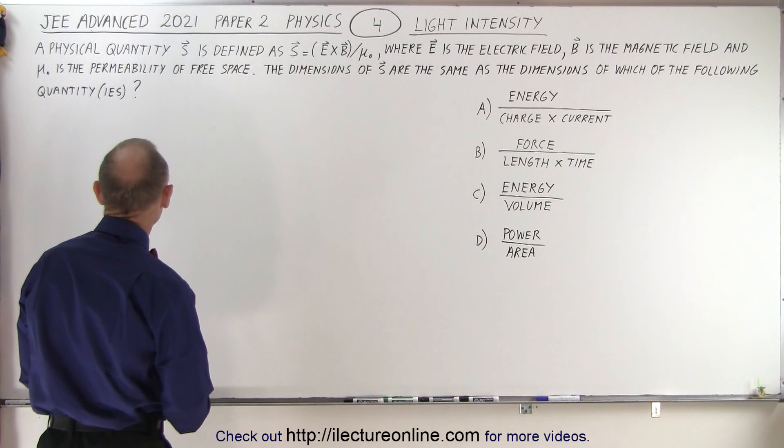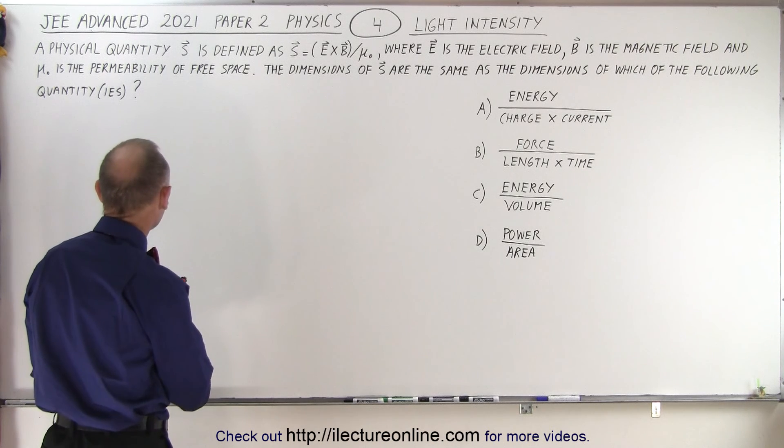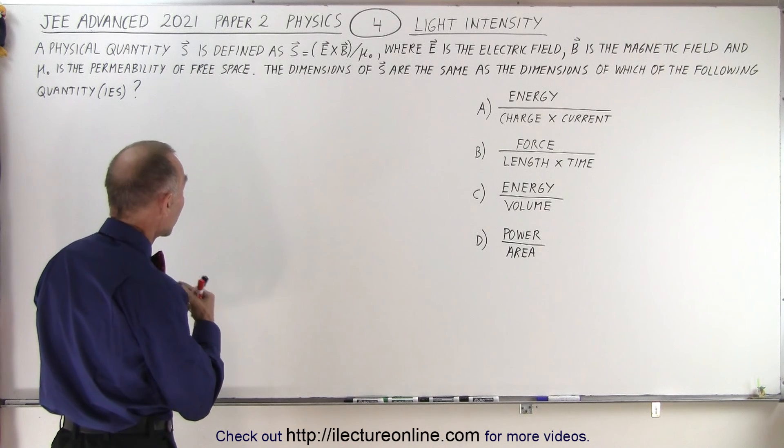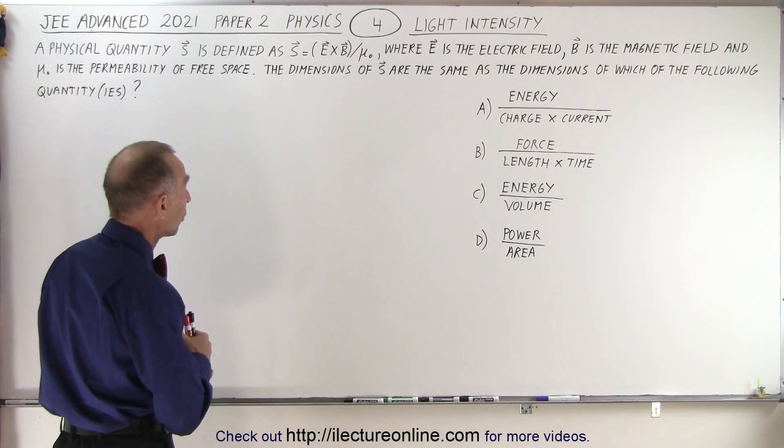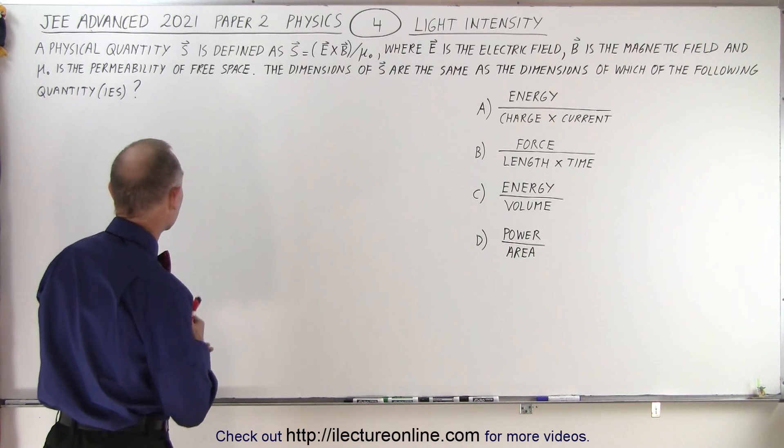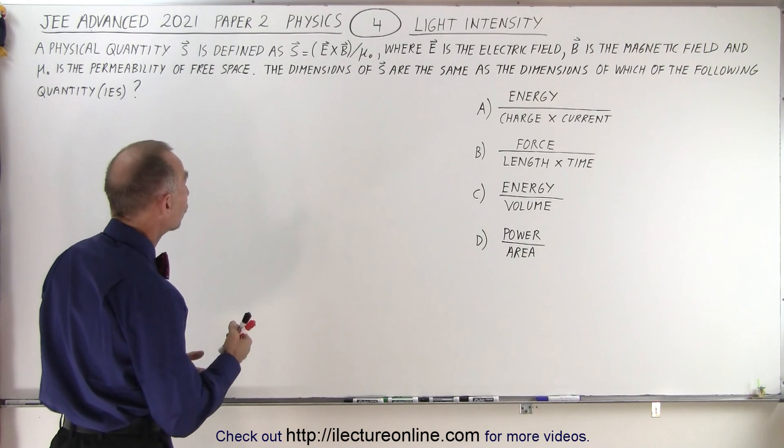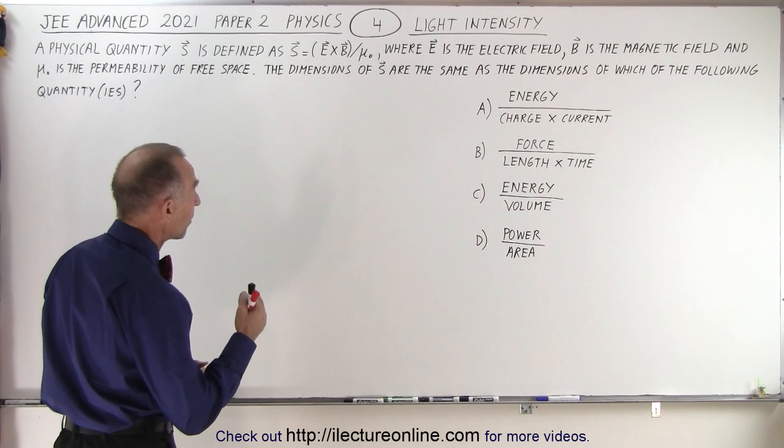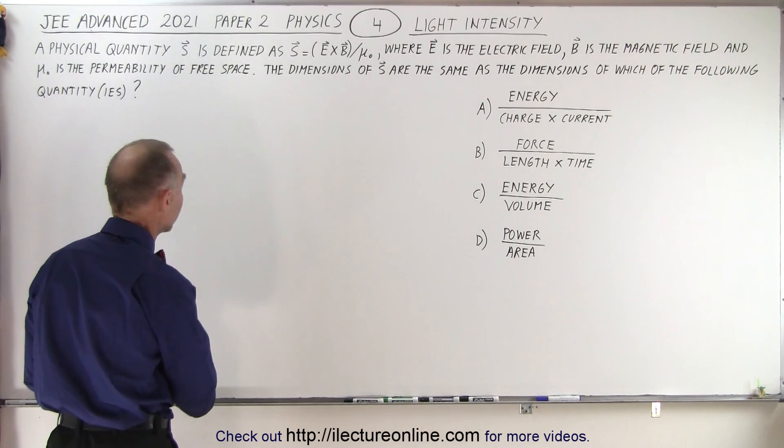It deals with light intensity, and it says that a physical quantity, the S vector, is defined as E cross B divided by mu sub nought, where E is the electric field, B is the magnetic field, and mu sub nought is the permeability of free space.